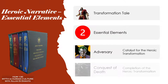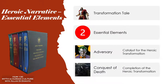The second essential element is the conquest of death. It could literally be a conquest of death, but it could also be used metaphorically. The hero will very often reach a point where everything is on the line — usually the darkest place they arrive in their quest — and they need to conquer that ultimate thing. In their victory, they complete their transformation. This is the point usually at the end of the story where the hero fully manifests for the first time. You need an adversary as a catalyst and a conquest of death for the completion of the transformation.